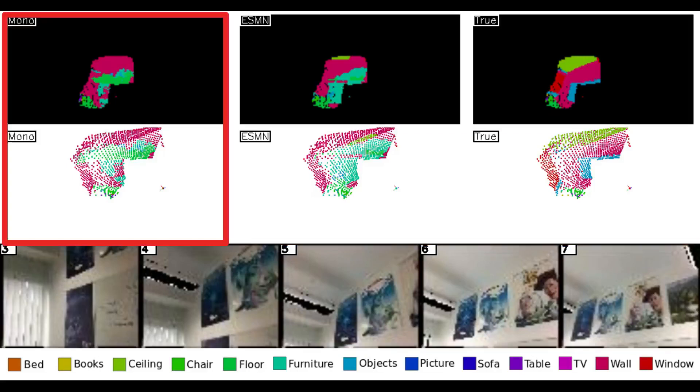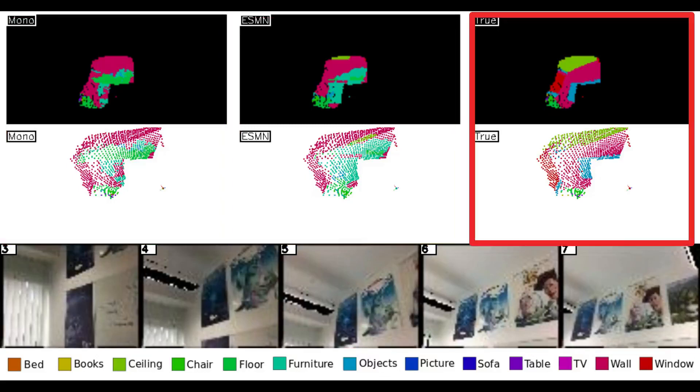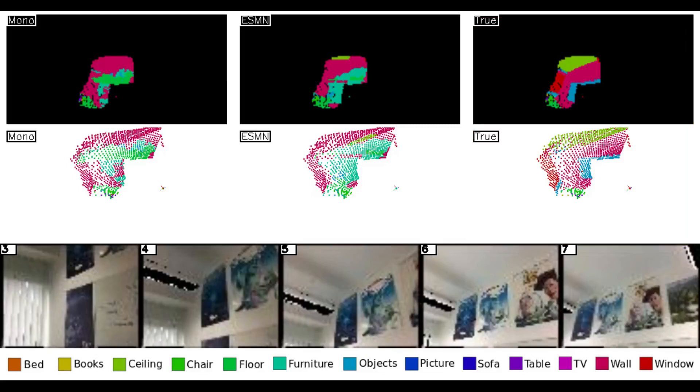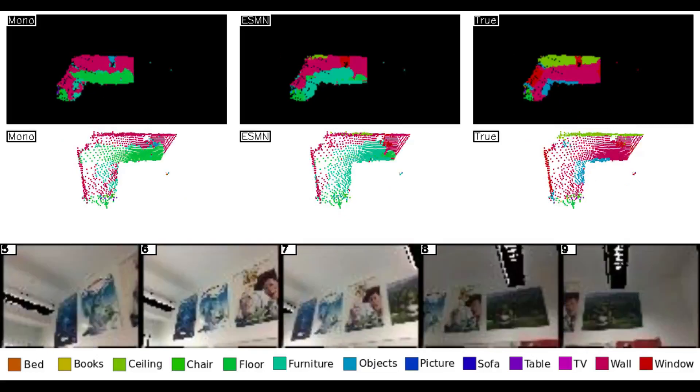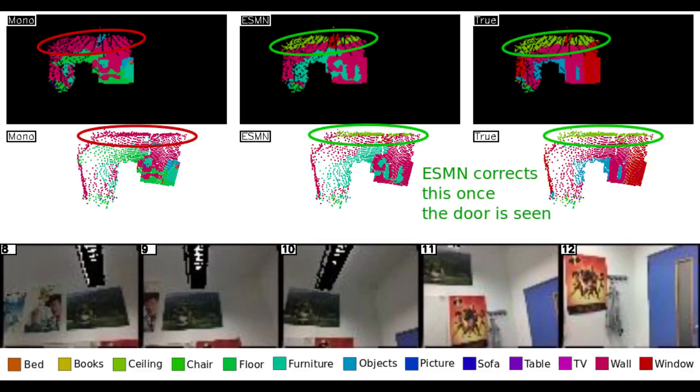We show a monocular fusion baseline on the left, ESMN in the middle, and ground truth on the right. Both mono and ESMN mistake the ceiling for wall at the beginning. ESMN then retrospectively corrects for this when the door is seen, due to the improved context.